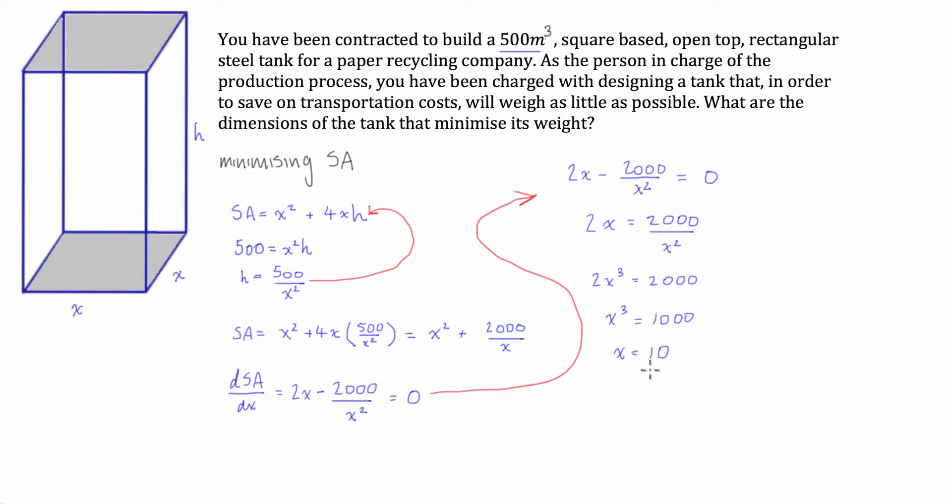So we've just been able to calculate the value of X which minimizes the surface area. Now all we have to do is substitute this into our equation that we've derived for height, and we get the height is equal to 500 over 10 squared or 5.